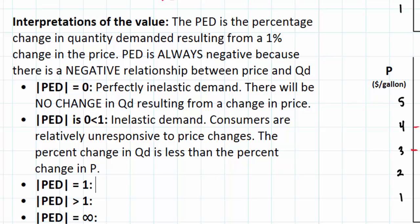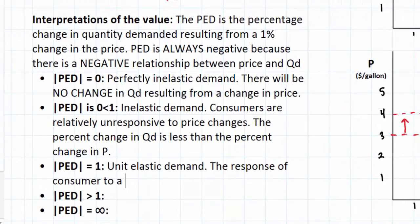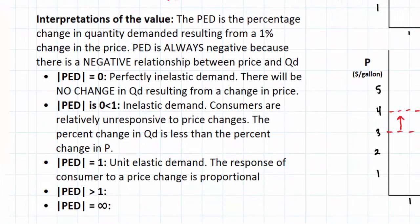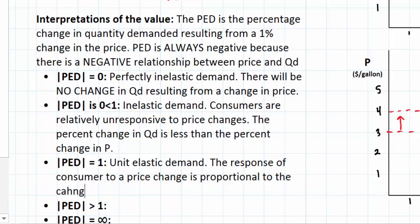If the PED coefficient equals 1, the result is what we call a unit elastic demand. In other words, the response of consumers to a price change is proportional to the change in price. In other words, percent change in QD is equal to the percent change in price.